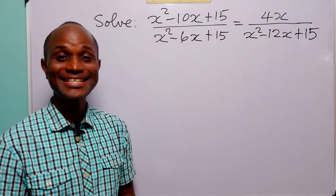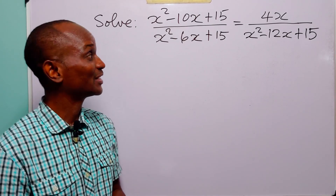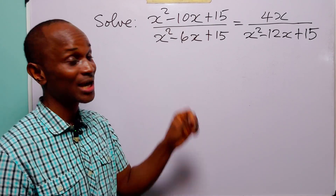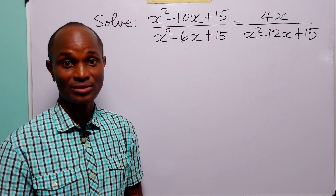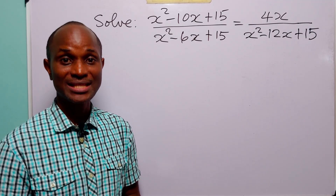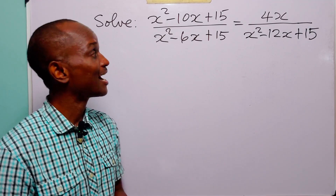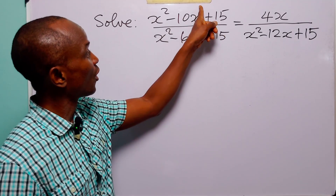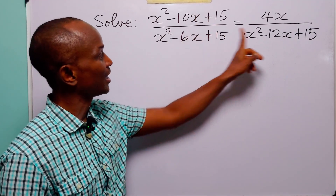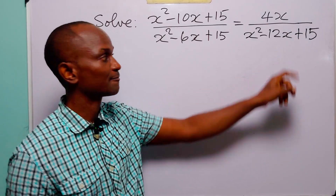Hello and welcome. In this math tutorial, our task is to solve the given rational equation. And to do this, we are going to start by factorizing x out of all three quadratic equations.